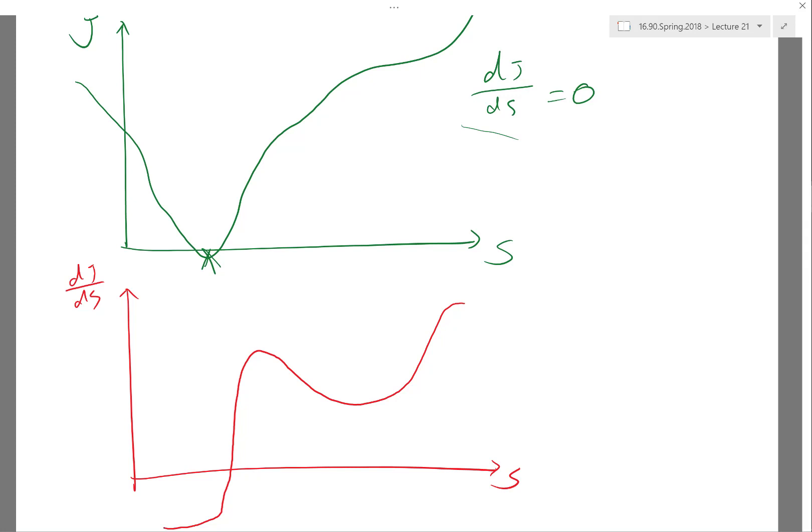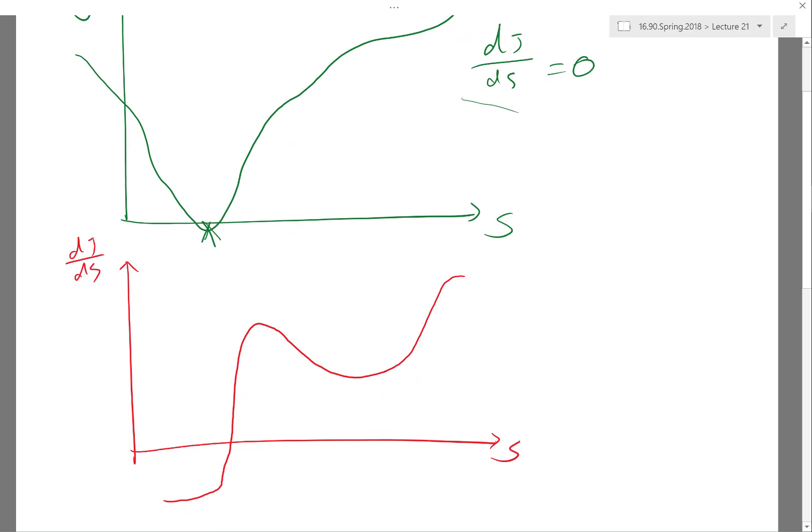Newton-Raphson method starts at almost a random initial guess. If I start, for example, right over here, what I get is I start with S0. Newton-Raphson method computes the function for which I'm trying to find the root. So it computes dJ/dS at this point. Then it computes the derivative.